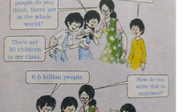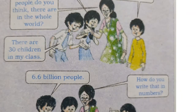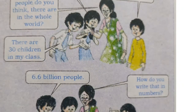Now children, let's look at the topic: distribution of population. First of all, we should know what is the meaning of distribution of population. Distribution of population means the way in which people are spread across a given area.